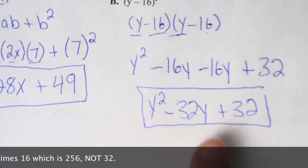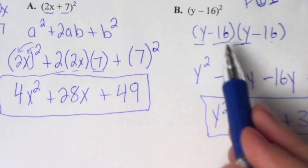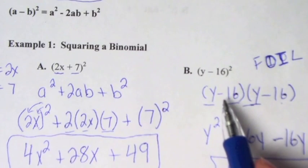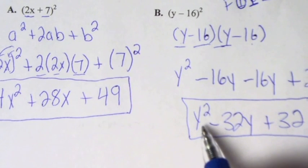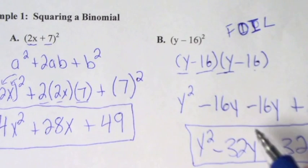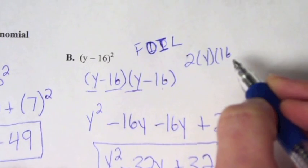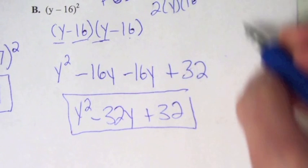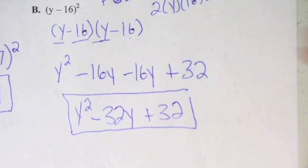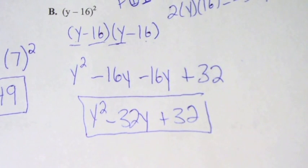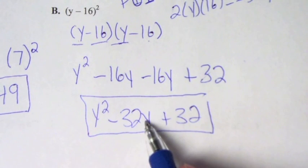If we had used the formula on this problem, the first term is just a squared, which is y squared. The second term is 2 times a times b, so 2 times y times 16, which gives you 32y — and it's minus because of the minus sign. This formula is a shortcut to having to FOIL and then combine the middle two terms.